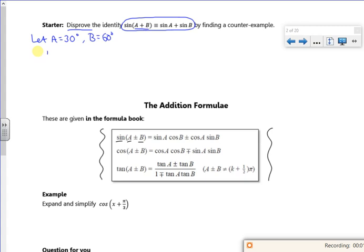So if I look at the left hand side of it, then that's sine of A plus B. So then the left hand side is really sine of 30 plus 60 degrees, which is sine of 90. So we know that from the graph, sine of 90 is 1.